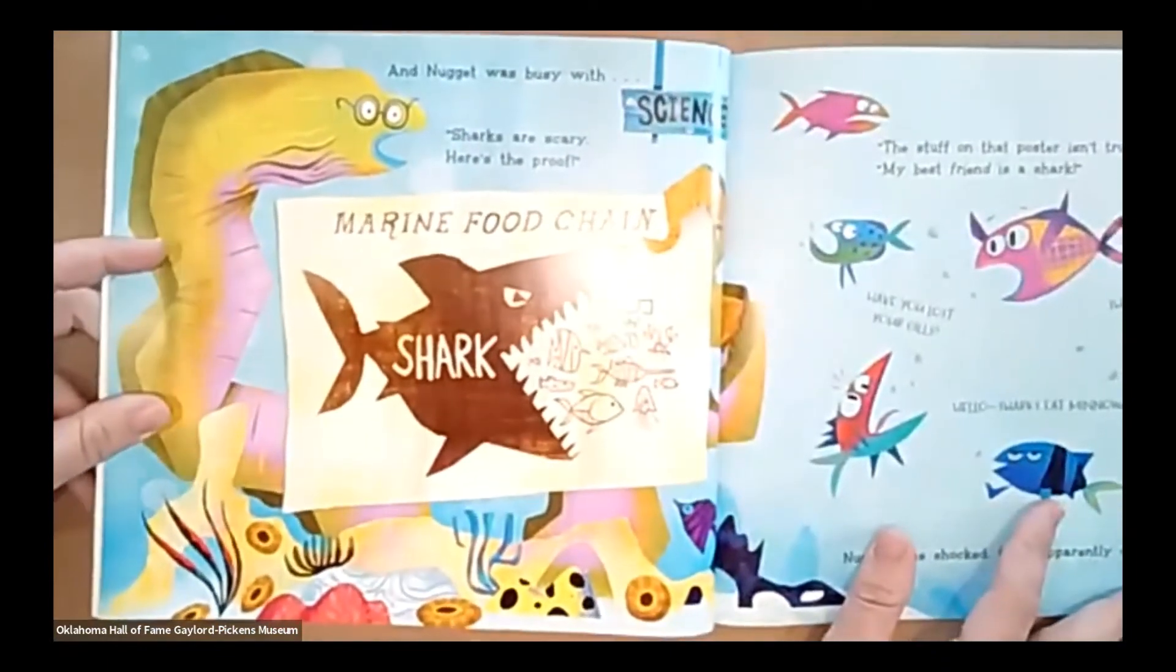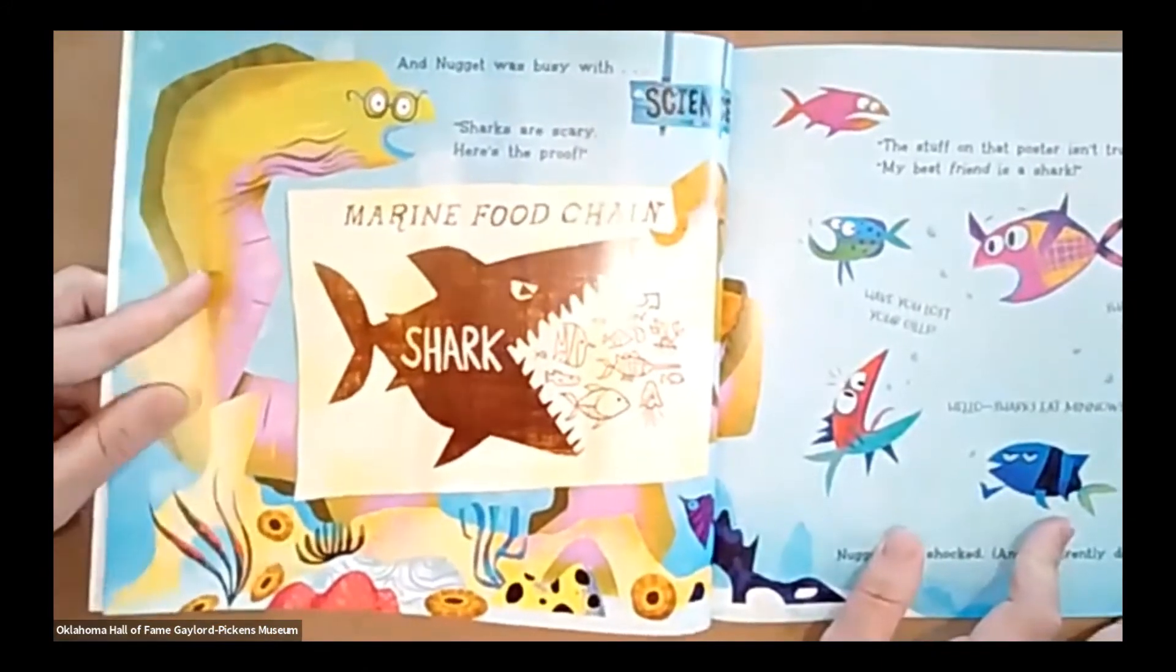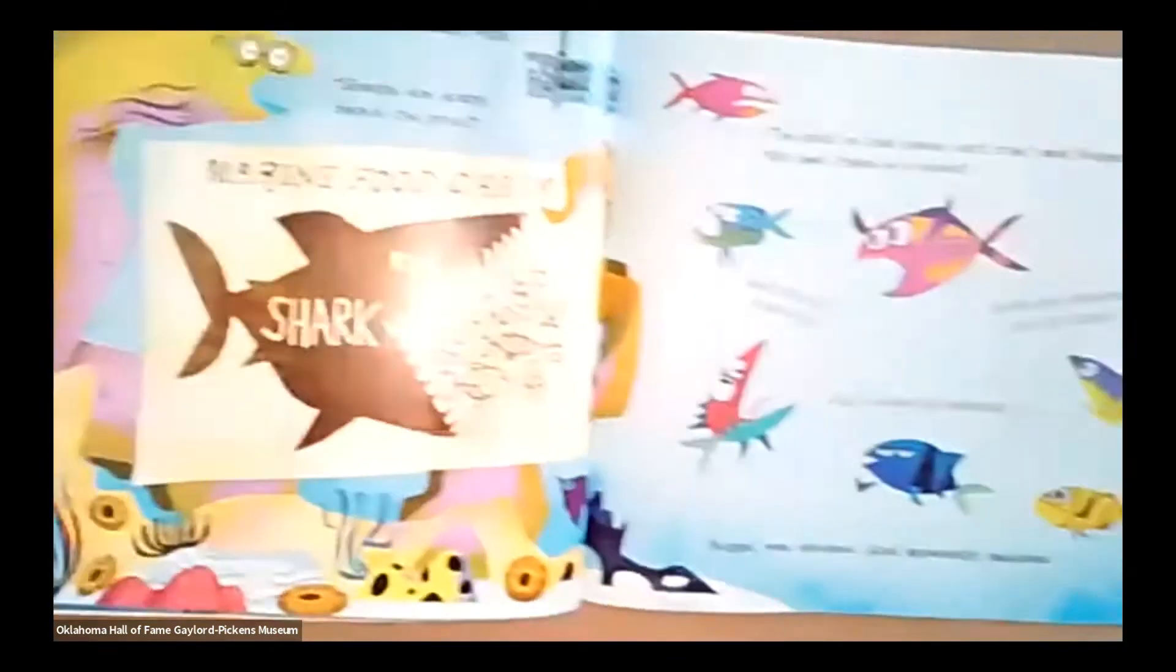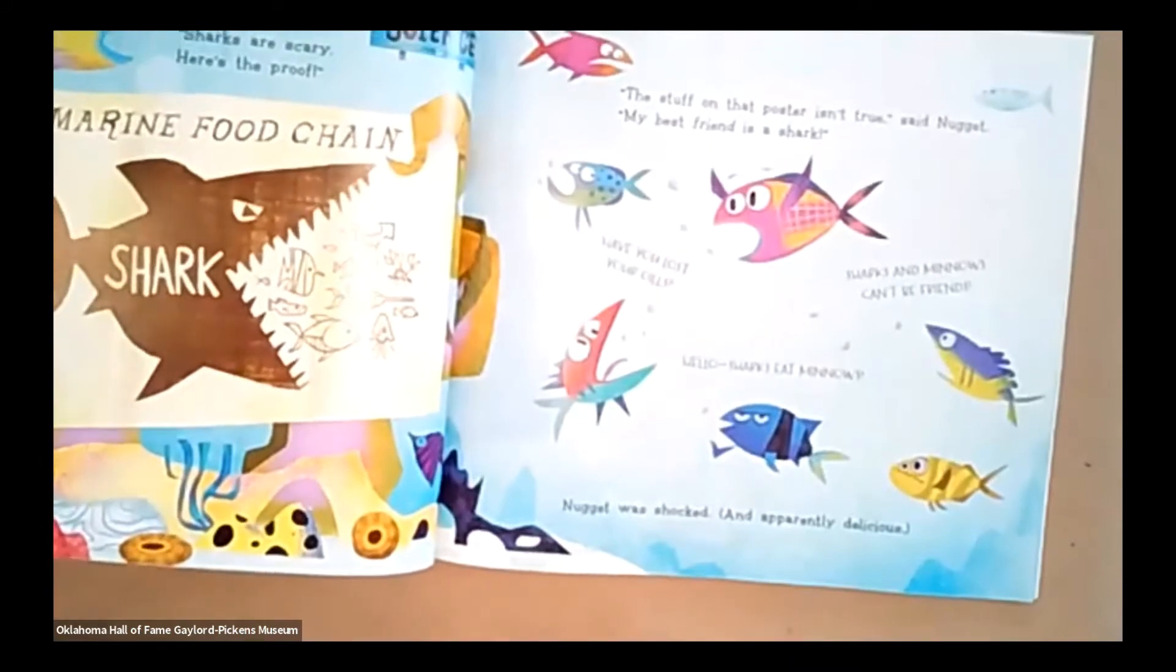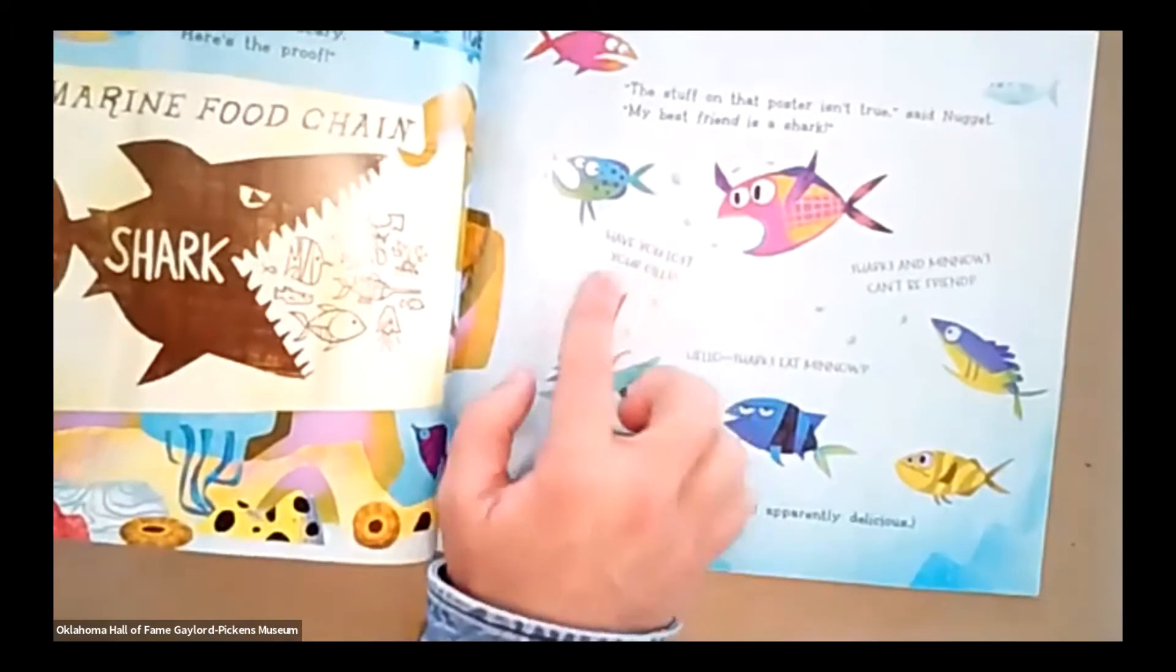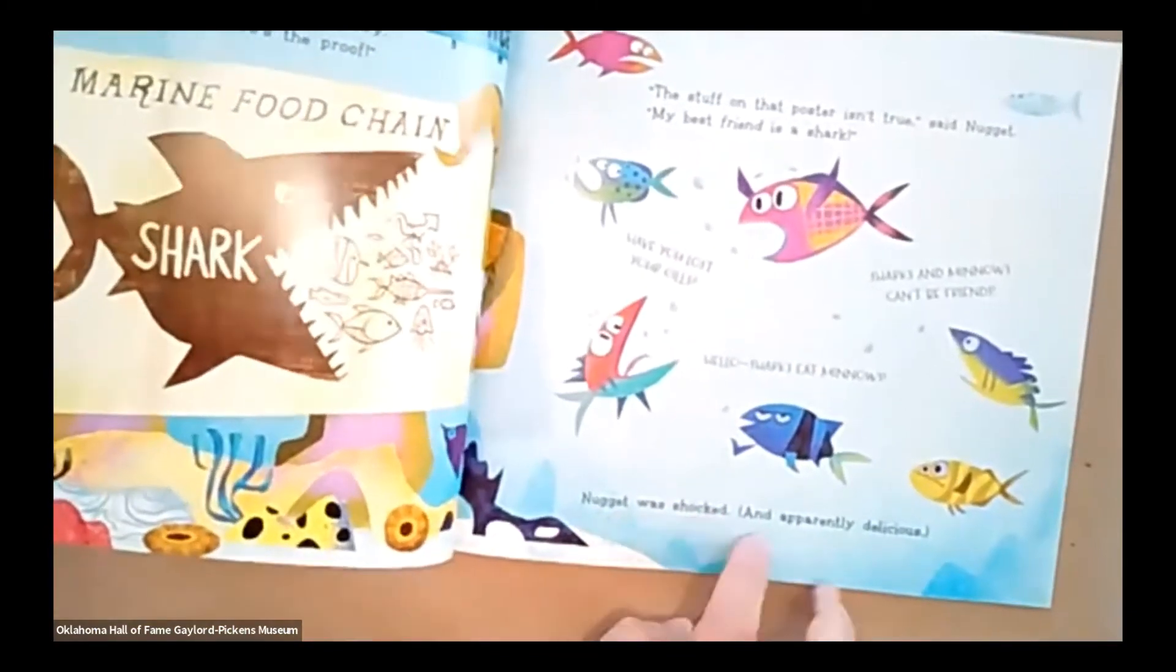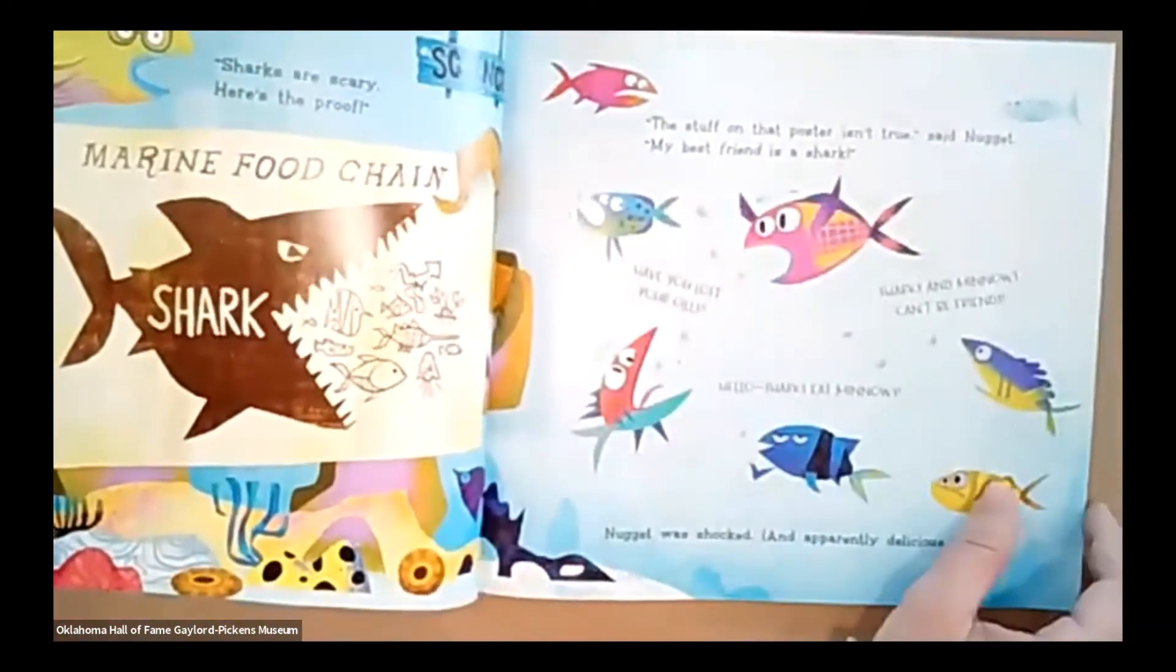And Nugget was busy with science. Here goes the teacher. Sharks are scary. Here's the proof. There he is. He's holding up the food chain and there's the shark eating all the sea creatures. Here goes Nugget again. That stuff on the poster isn't true, said Nugget. My best friend is a shark. Have you lost your gills? Sharks and minnows can't be friends. Hello? Sharks eat minnows. Nugget was shocked and also apparently delicious.